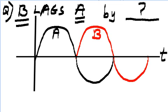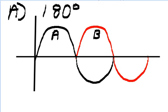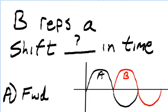B lags A by what? Answer: 180 degrees. B represents a shift blank in time. Answer: forward in time. B represents a shift forward in time.